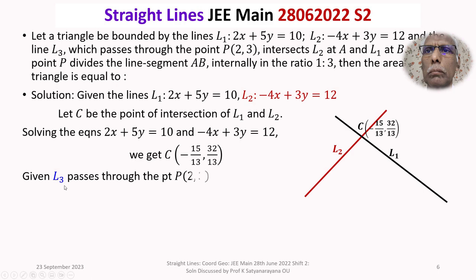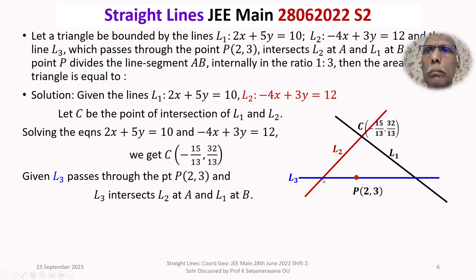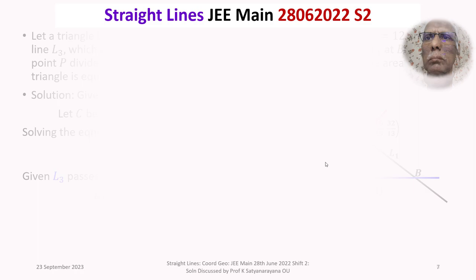There is a line L3 which passes through the point P(2, 3). L3 intersects L2 at A and L1 at B, thus forming the triangle ABC whose area is required. The coordinates of C are known. We need to find the coordinates of A and B. If we know all three vertices of triangle ABC, we can easily find the area.